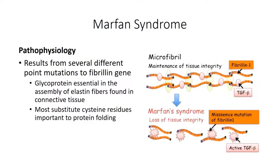Marfan syndrome occurs with any one of a number of mutations to the fibrillin protein. Many of these mutations involve substitution of a cysteine residue that is important to proper folding of the glycoprotein, similar to the effects of a glycine substitution in osteogenesis imperfecta. Fibrillin is a glycoprotein that plays a critical role in formation and maintenance of the extracellular matrix, particularly with the organization of elastin fibers. Deficiencies in fibrillin are thought to compromise connective tissue integrity, resulting in damage to elastin fibers.